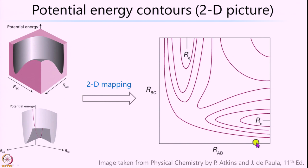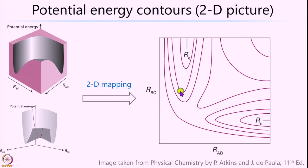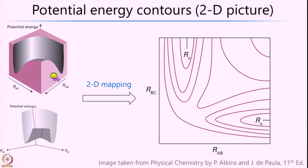The question is how to map this into a 2-dimensional picture. What people typically do is construct what are called slices or contour maps, which is what is shown on the right-hand side — this is called a 2D contour map of the H3 system. To obtain it, one must first realize that in the 3D picture R_BC and R_AB point in one direction, whereas in the 2D picture they are in a slightly different orientation. The 2D picture is obtained by tilting the 3D surface at a particular angle, so the diagram is not in exactly the same orientation as the 3D potential energy surface, but is slightly tilted to make the 2D map clearer.